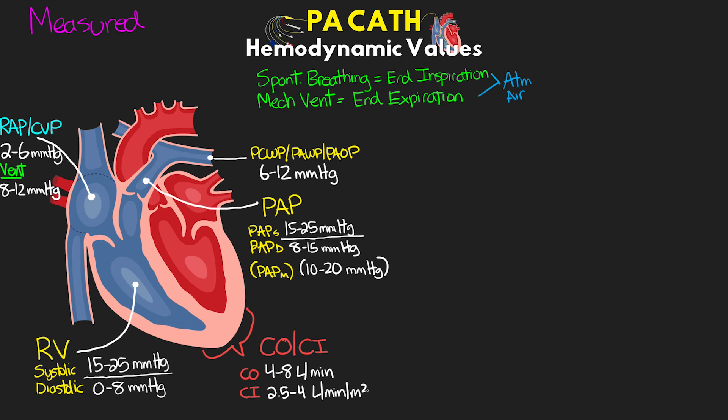That's all the values that we can really measure from our PA catheter. Now in order to fully calculate all the hemodynamic parameters we're looking for, we're going to need one more direct measure, which we get ideally from an arterial line, but we can also use a non-invasive blood pressure cuff. With an arterial blood pressure, we've got a systolic, a diastolic, and a mean pressure, and our normal blood pressure is going to be 120 over 80, with a MAP greater than 60.